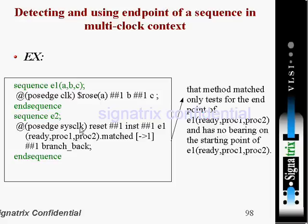Now in the second sequence e2, at the passage of system clock, reset should occur. Notice the different clocks — here system clock, there clock. Reset signal should occur, then one clock cycle later the instant signal, then after one clock cycle e1, which is another sequence. You are passing three signals — process one, process two — as actuals to this sequence, then using dot-matched.